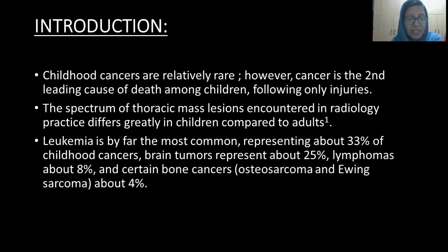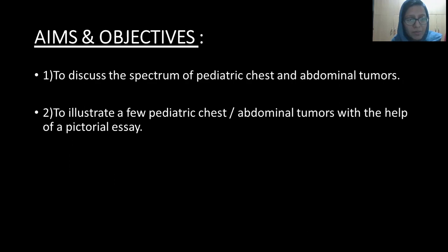Childhood cancers are relatively rare. However, cancer is the second leading cause of death among children following only injuries. The spectrum of thoracic mass lesions encountered in radiology differs greatly in children compared to adults. Leukemia is by far the most common, followed by brain tumors, then lymphomas, and then certain bone cancers such as osteosarcoma and Ewing's sarcoma. The aim of my paper is to discuss the spectrum of pediatric chest and abdomen tumors and to illustrate the same in the form of a pictorial assay.